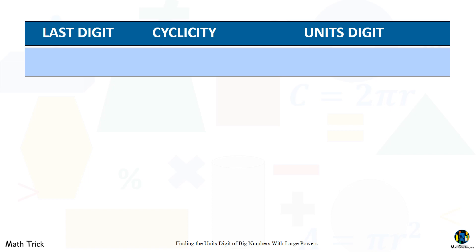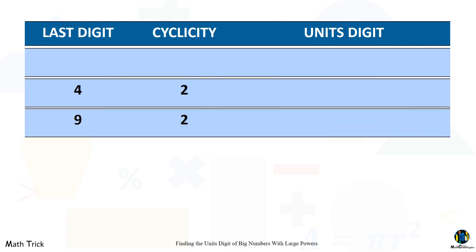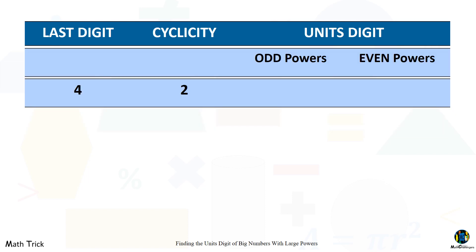For numbers ending in four and nine, the cyclicity is two. The exponents can be either even or odd. For numbers ending in four: if the exponent is an odd number, the unit's digit is four; if the exponent is an even number, the unit's digit is six.